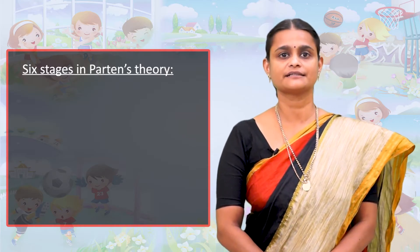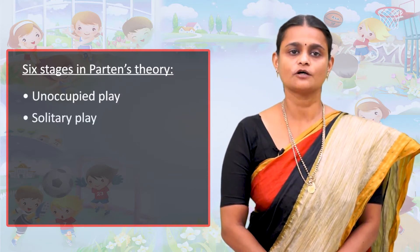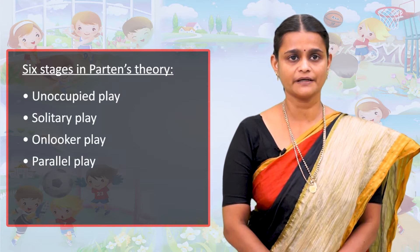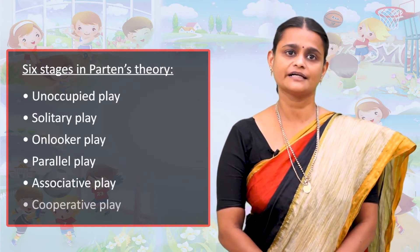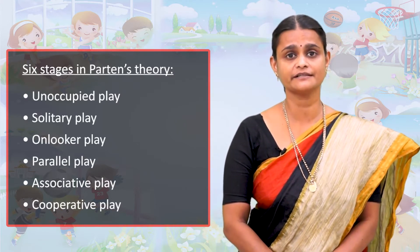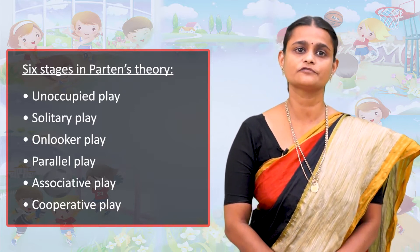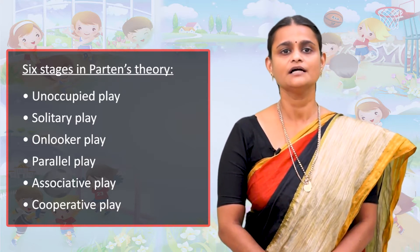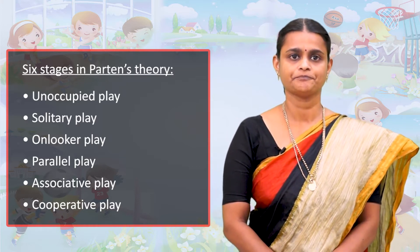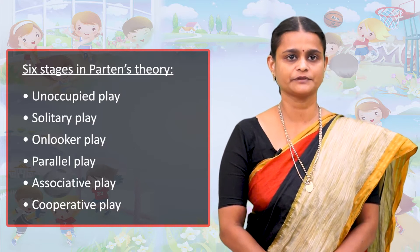Parton classified the participation of children during free play by observing children aged two to five. There are six stages in Parton's theory: unoccupied play, solitary play, onlooker play, parallel play, associative play, and cooperative play. In this video, we will study about the first two types of play, namely unoccupied play and solitary play. The rest of the types will be dealt with in the next video.